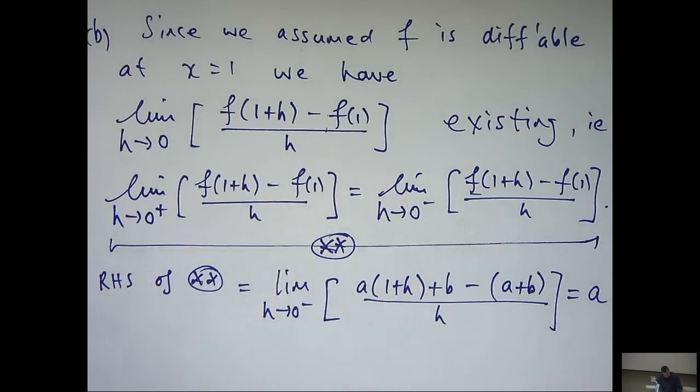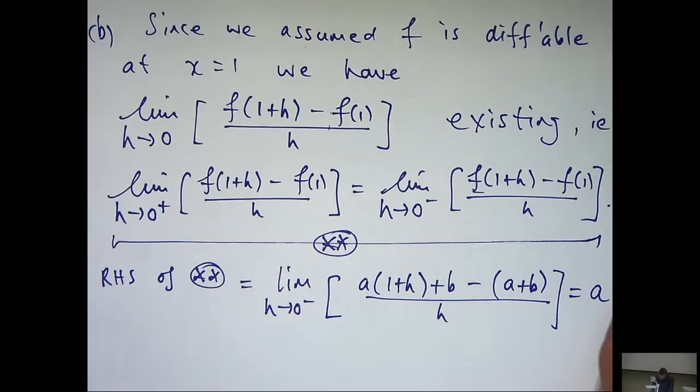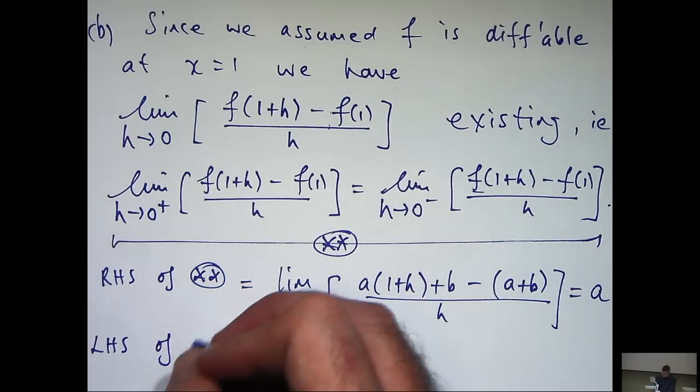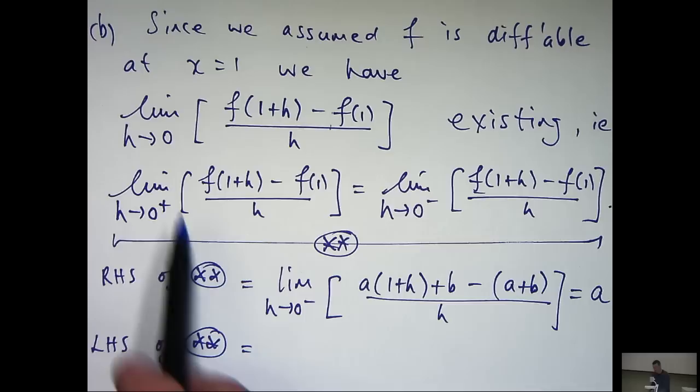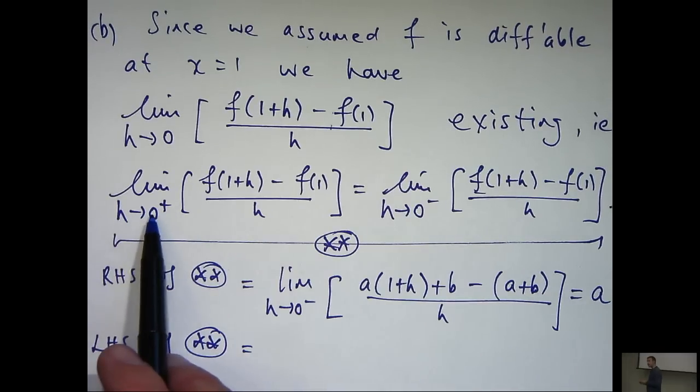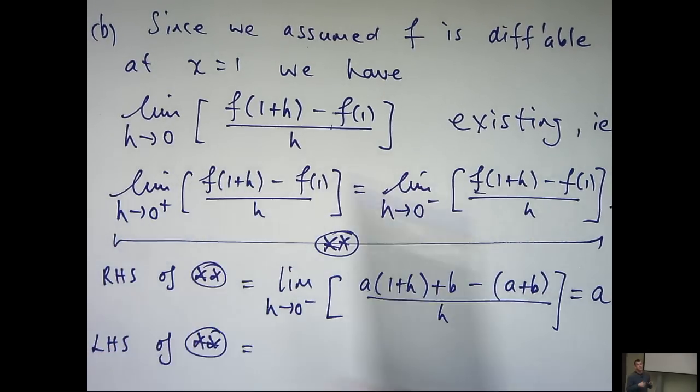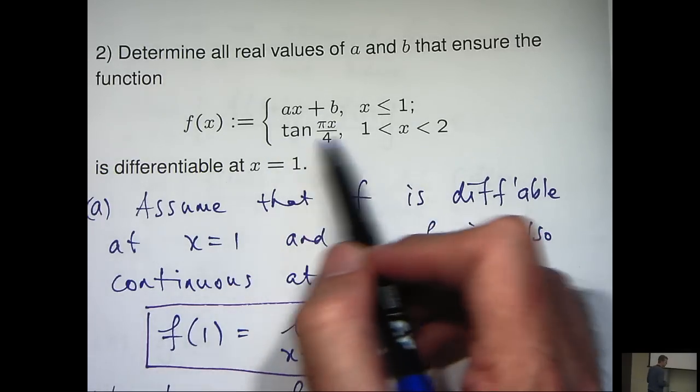Now, the limit here is more involved. So, the left-hand side of double star. h is approaching 0 from the right. So, h must be positive. So, 1 plus h must be greater than 1. So, we'll be using this part of the function here.